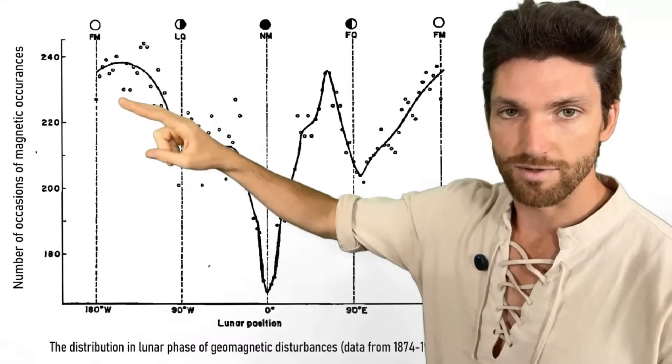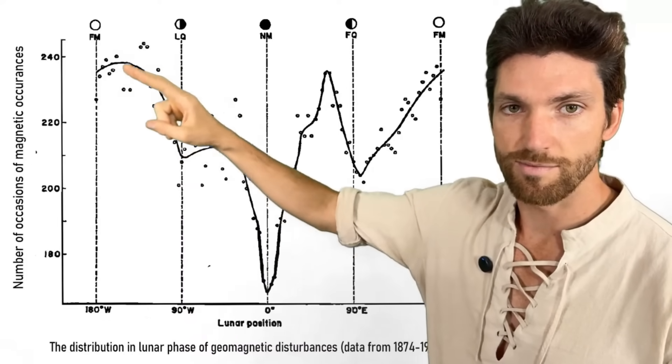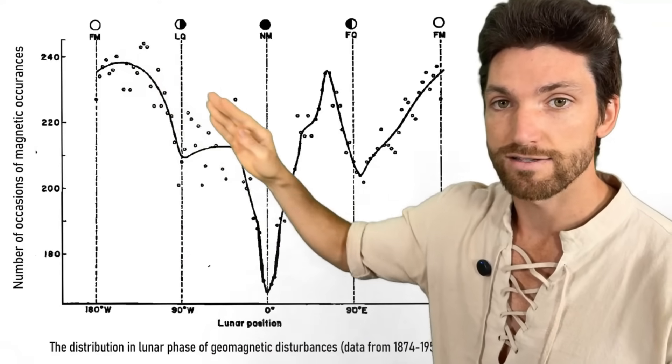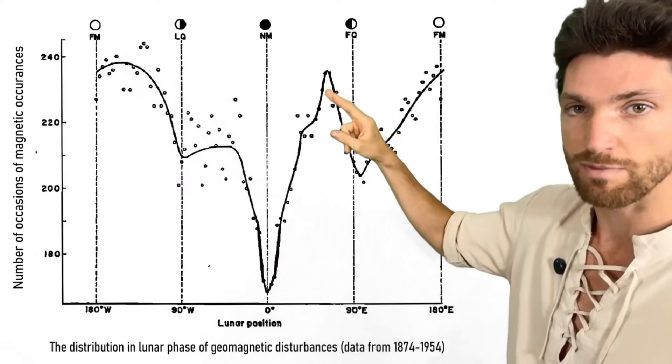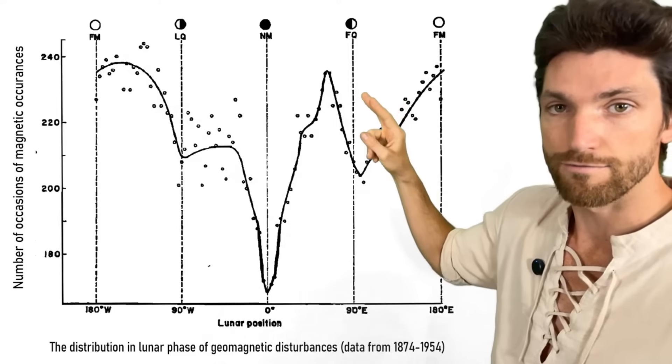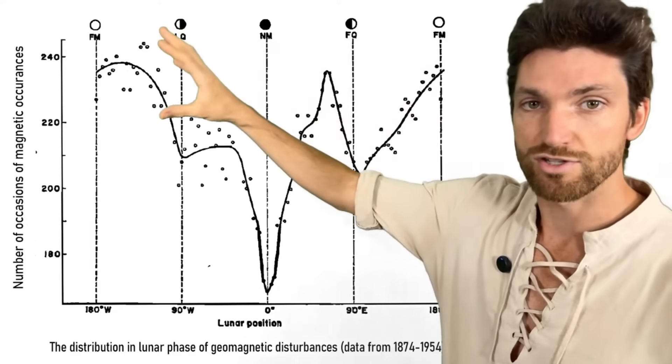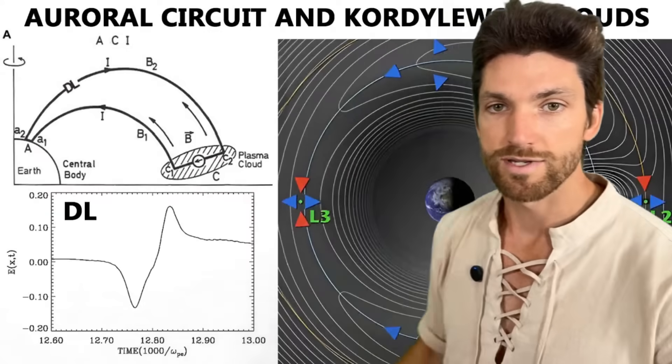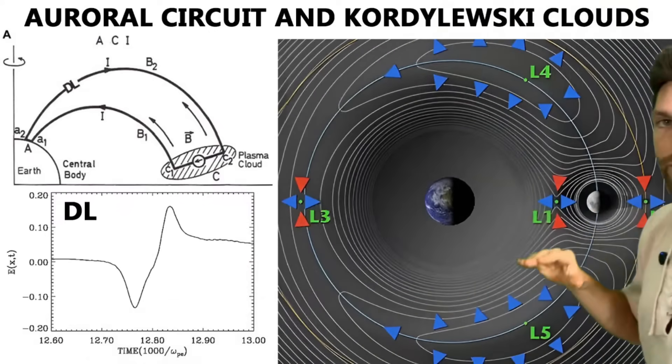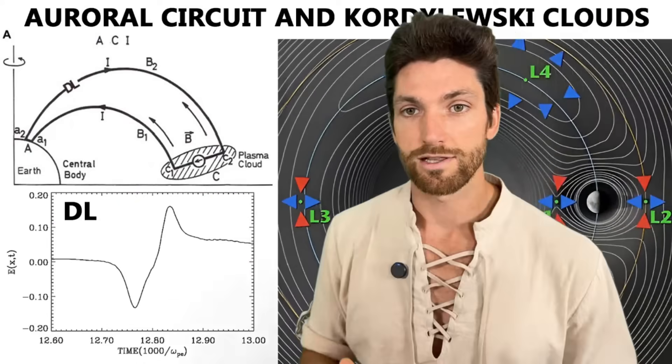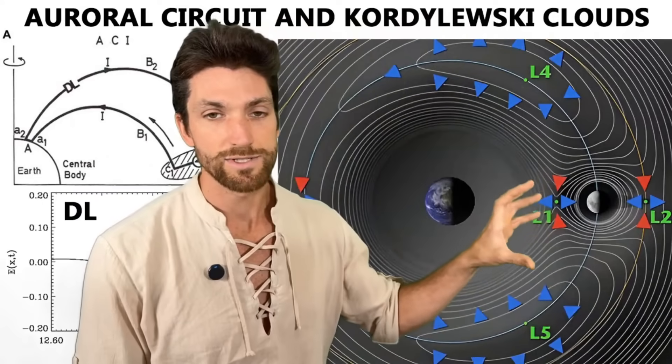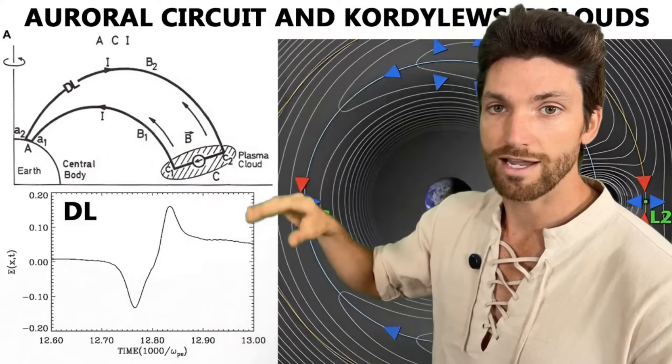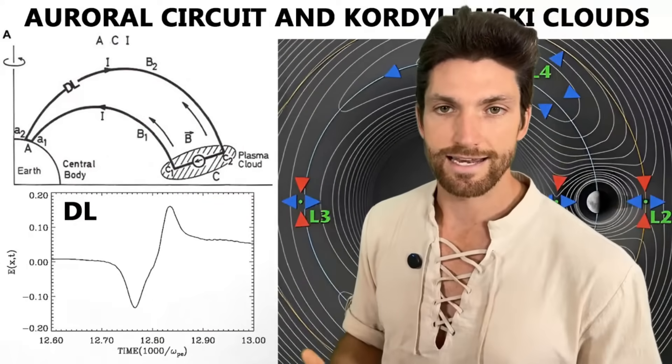And we even see that the highest occurrences of geomagnetic storms is right here slightly after that full moon phase. And then we see it ramping up there. We do get a spike there before the first quarter moon. But in general, you have the highest amount of disturbance right here after that full moon phase. And well, if you go back here, we see the Kordylewski clouds. And so that would be roughly when one of these clouds is going to be in that magnetotail. Perhaps that is better able to complete this auroral circuit and therefore enhance any geomagnetic activity.